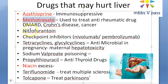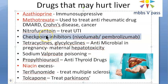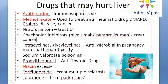Nitrofurantoin is usually given to treat UTI — urinary tract infection — so it is an antimicrobial. That is also hepatotoxic. Checkpoint inhibitors like nivolumab and pembrolizumab — these are monoclonal antibodies used in cancer treatment by immunotherapy — can also cause hepatotoxicity.